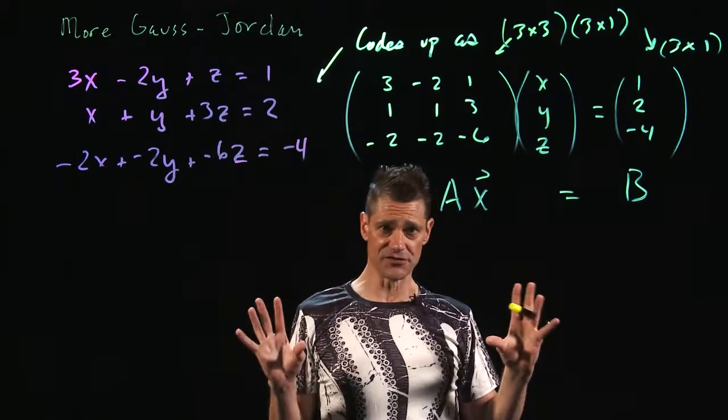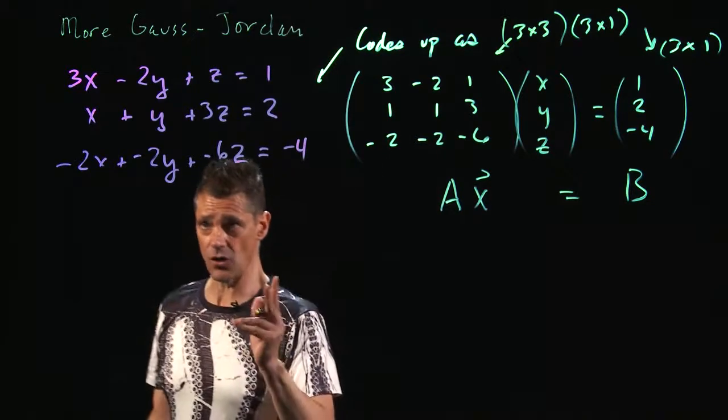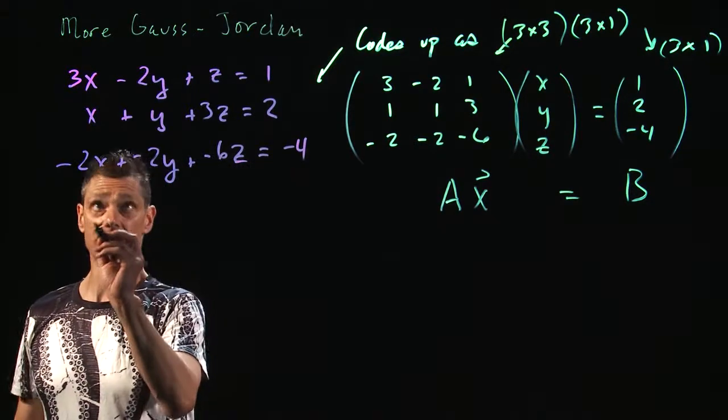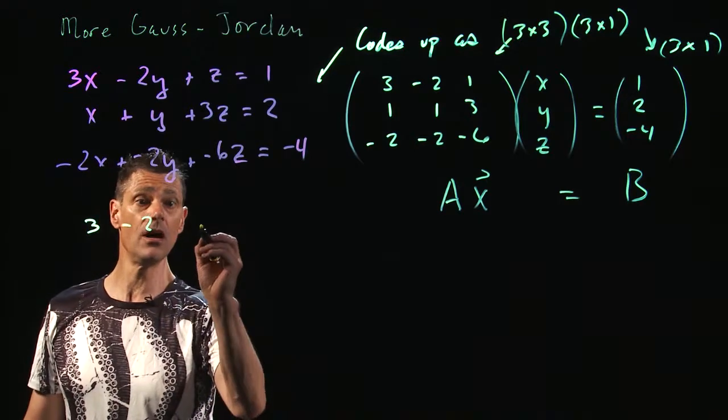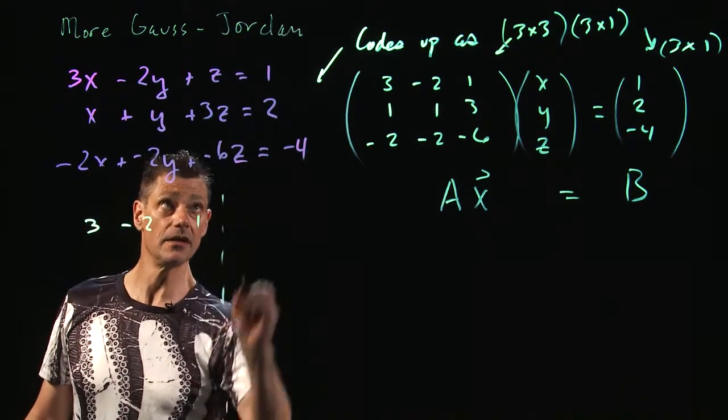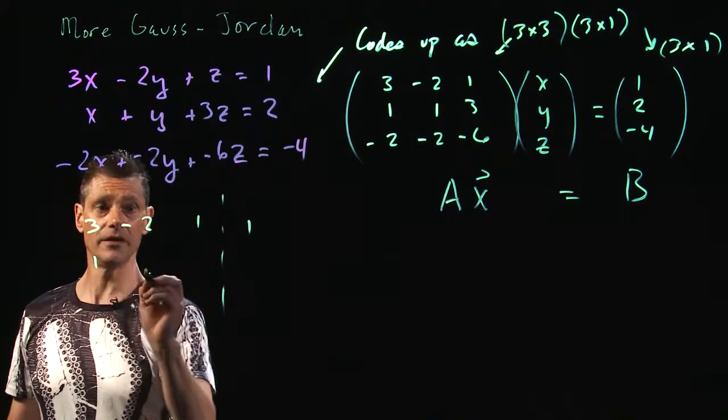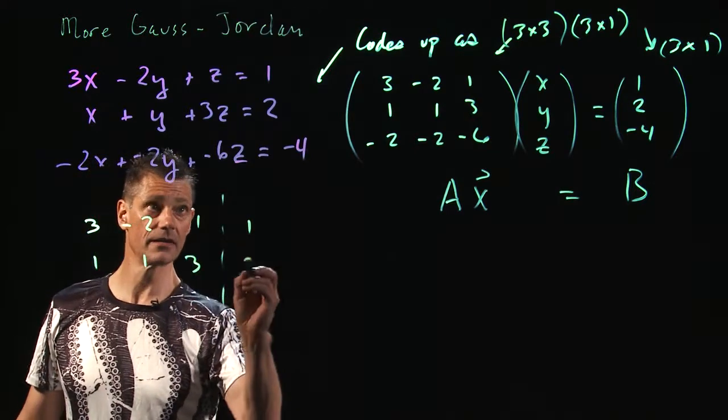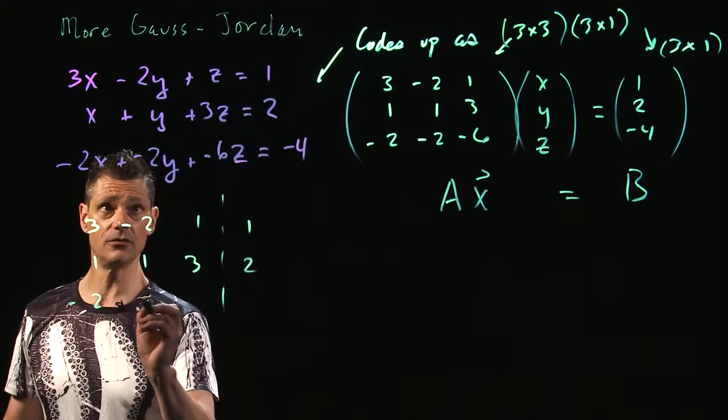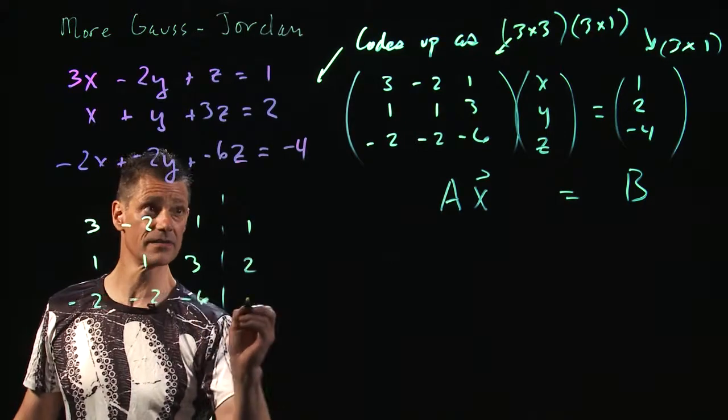But right now, let's just get our Gauss-Jordan on. First thing we need is the augmented matrix. This codes up like this: 3, -2, 1, 1; 1, 1, 3, 2; -2, -2, -6, -4.